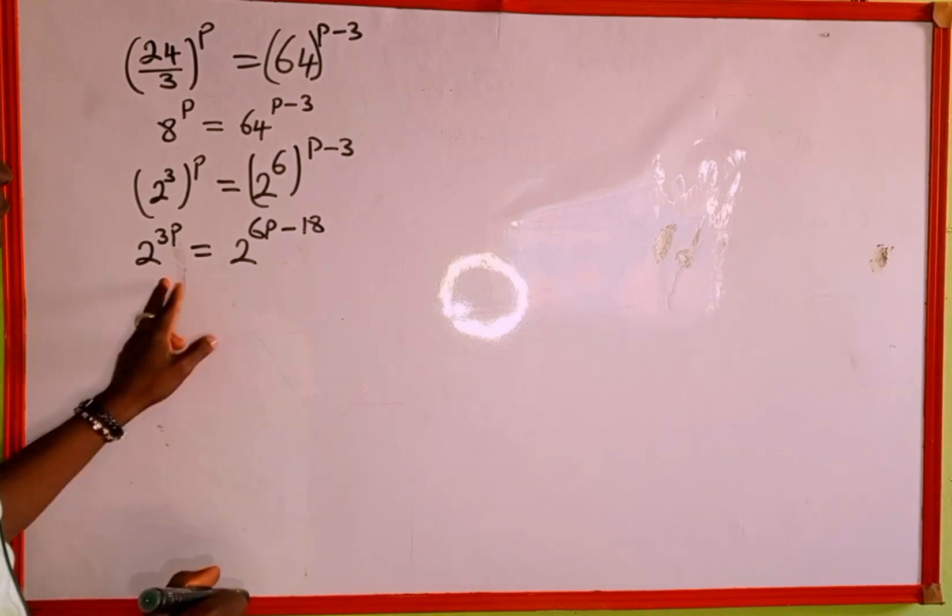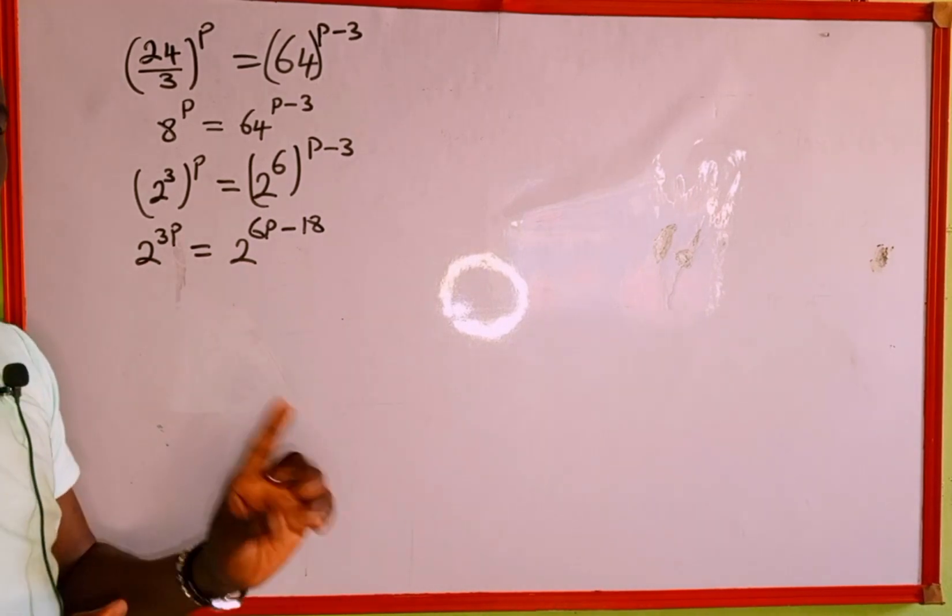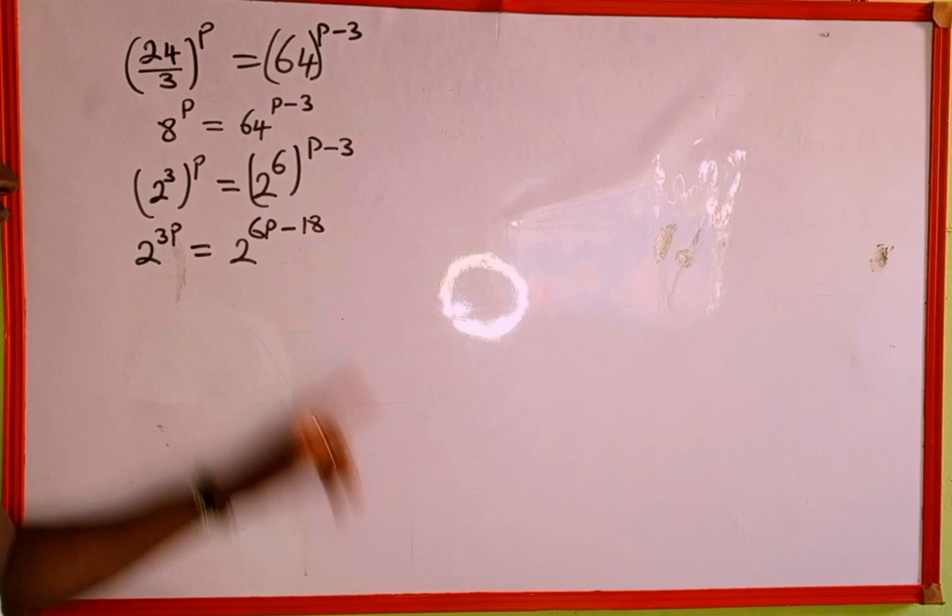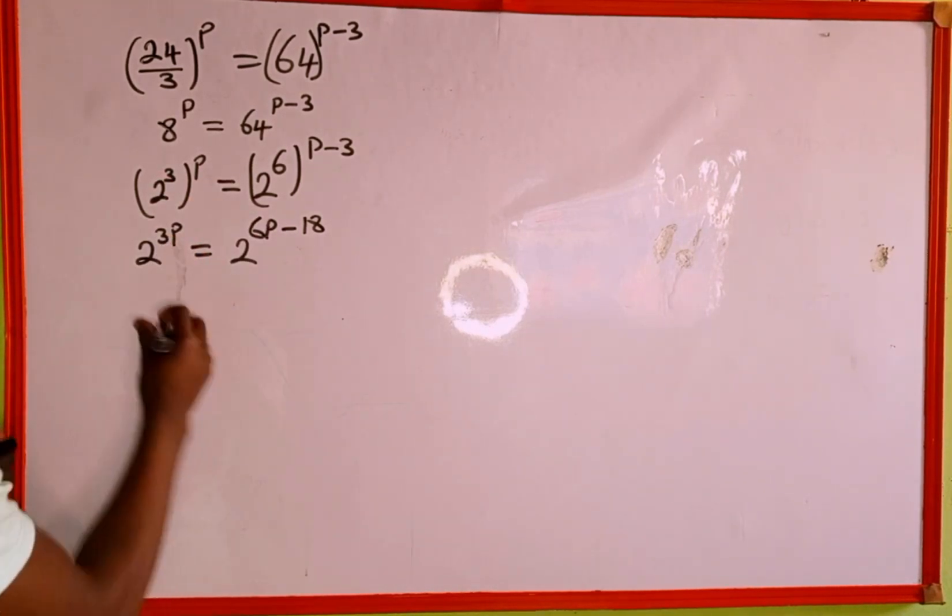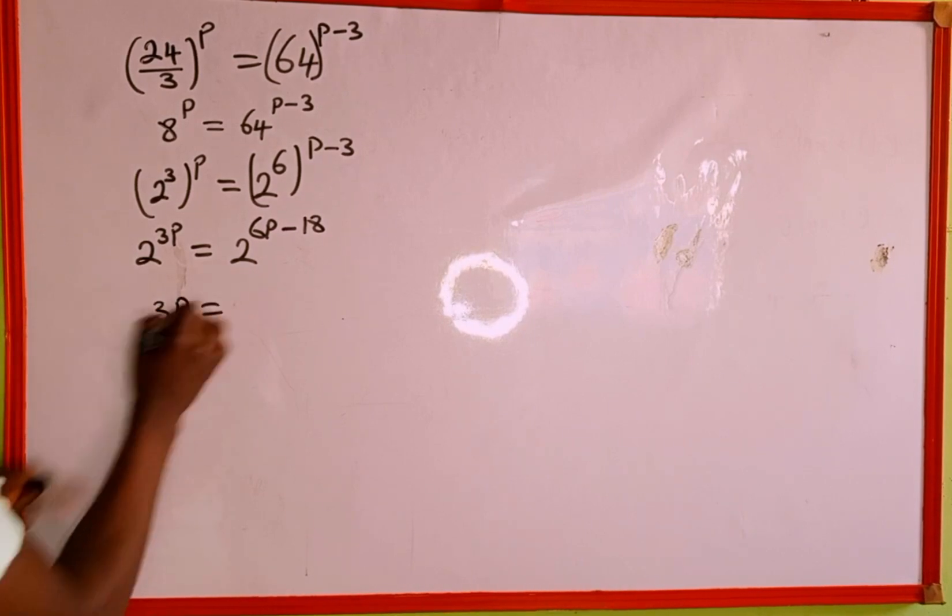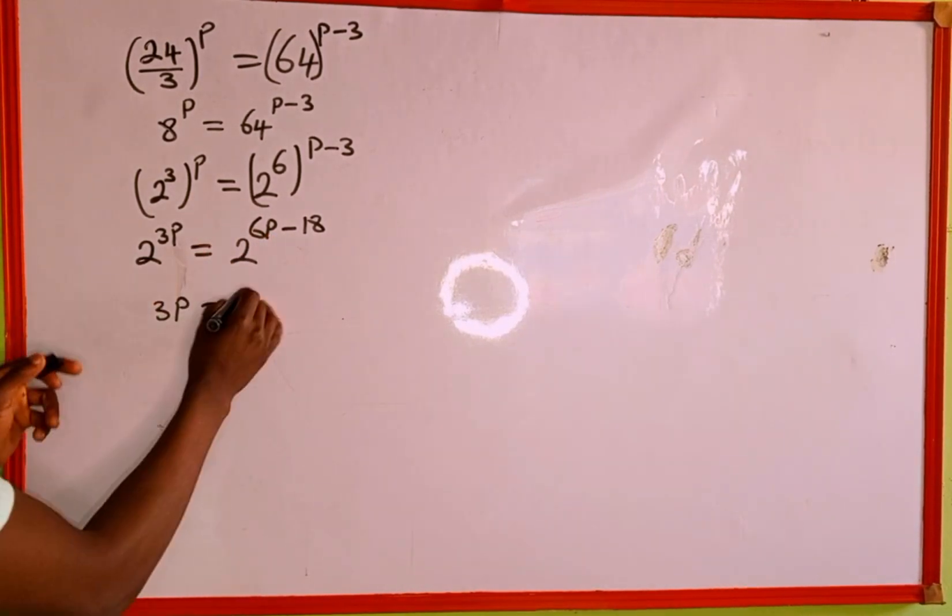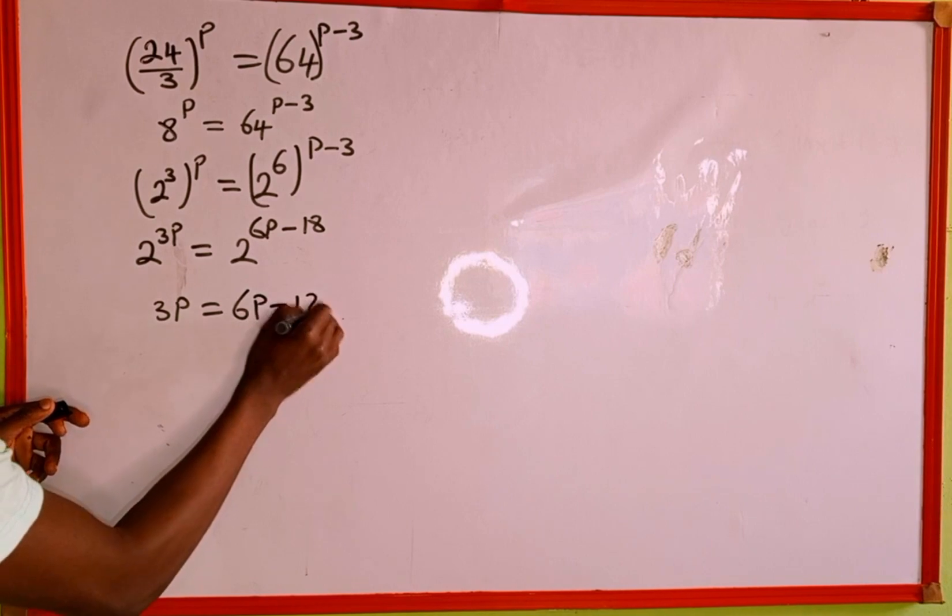Now we have successfully made the base the same. Recall one of the properties of indices: since the base is the same, we equate the powers. The first power is 3p, which equals the second power, 6p minus 18.